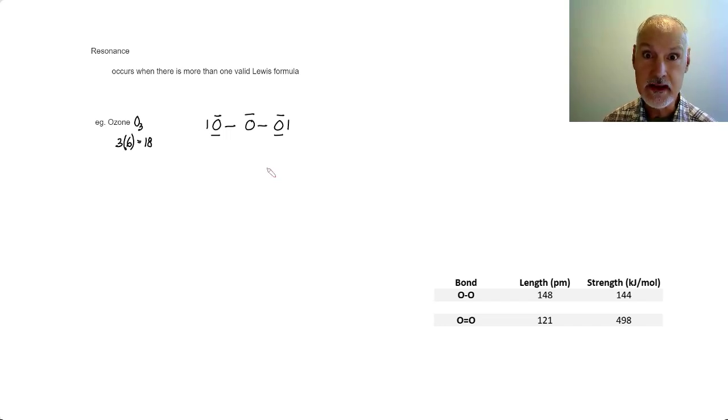Examination of that central oxygen indicates that it's short electrons. It doesn't have a stable octet. So to resolve this situation, I'm going to take that pair and move it in here, creating a valid Lewis formula.